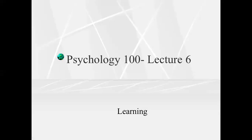In this series of videos, we're going to talk about learning. There are different ways that learning takes place. There's an associative process and then there's a non-associative process. We're going to focus on the three associative processes of classical conditioning, operant conditioning, and observational learning.